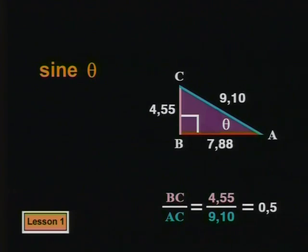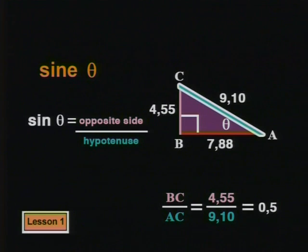Mathematicians have called this constant value sine of the angle. Using theta to represent any angle, we can define sine theta as the ratio of the side opposite the known angle divided by the hypotenuse.